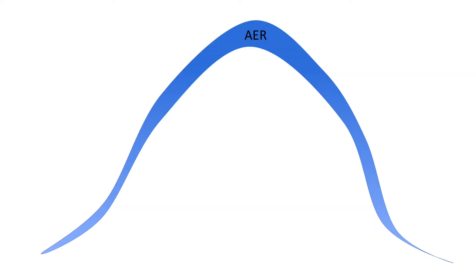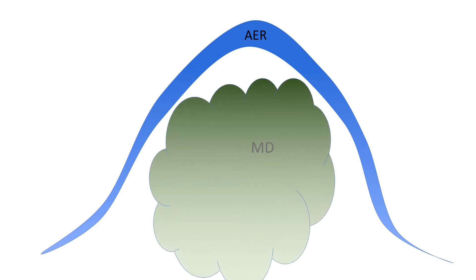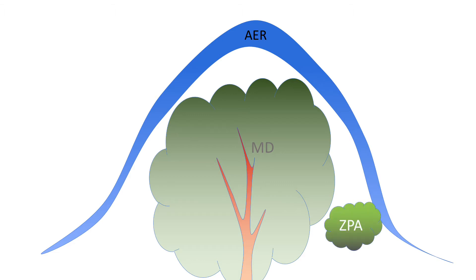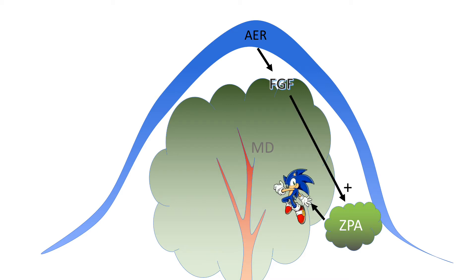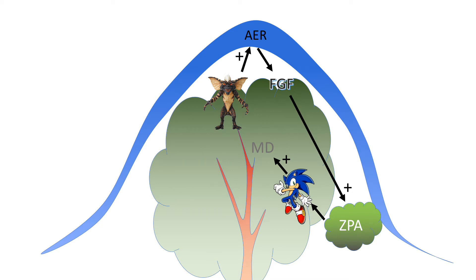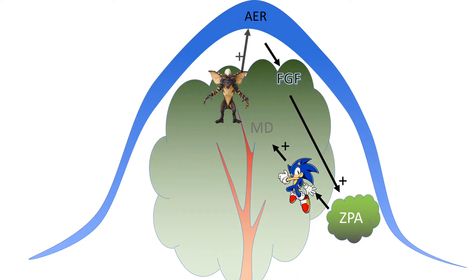What happens between the fourth and the eighth weeks? We'll start building the limb with an apical ectodermal ridge, a mesoderm, the blood vessel feeding the mesoderm, the zone of polarizing activity, and the AER making fibroblast growth factor which activates the ZPA. ZPA makes sonic hedgehog. Sonic hedgehog activates the mesoderm to produce gremlin. Gremlin then activates the AER, and this churn of one activating the other continues as the limb grows, making growth factors which activate each other.